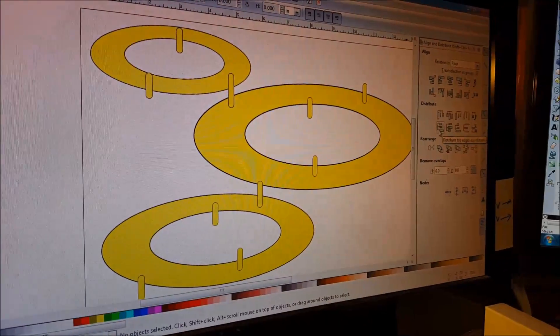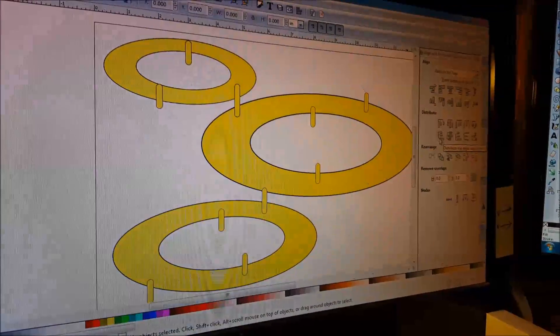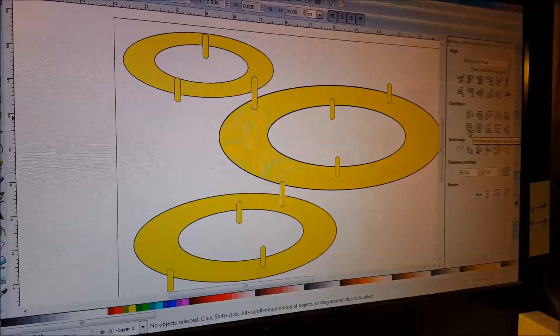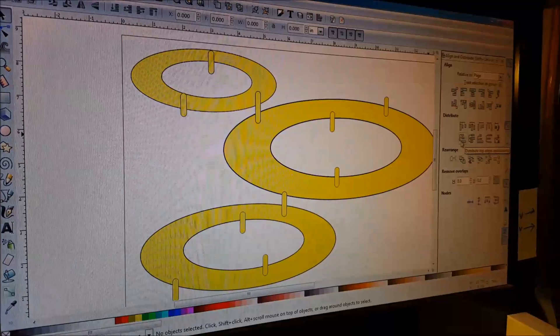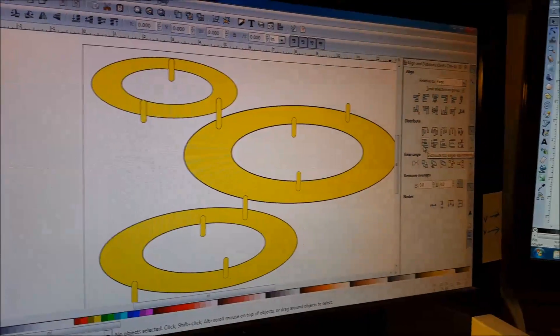These are our ring designs. And when I set something up for the CNC machine, the first thing I do is set my parameters. So I've got enough space on my table on the CNC machine.